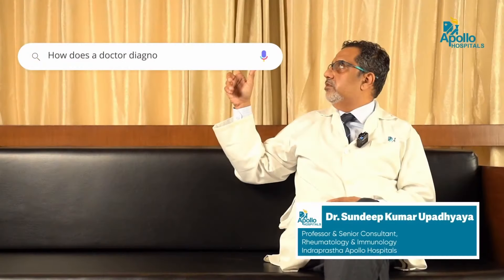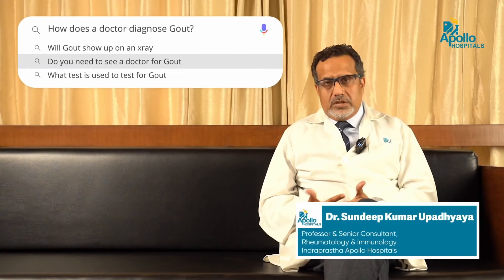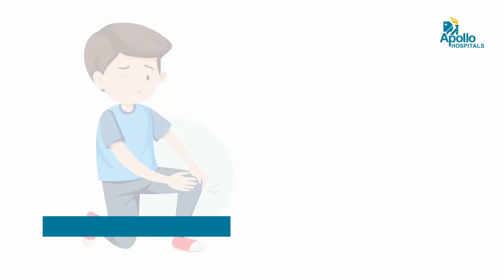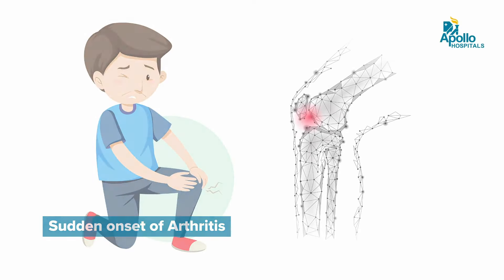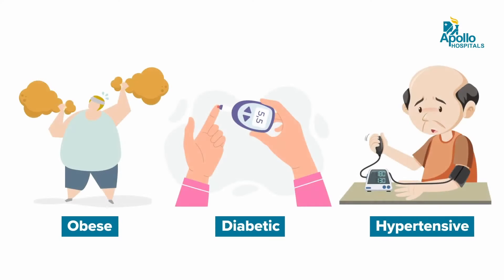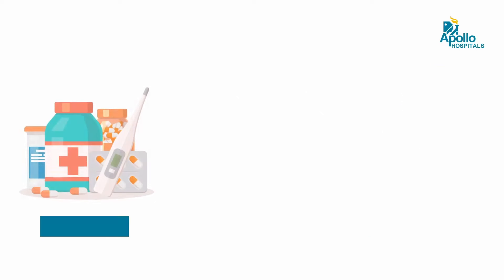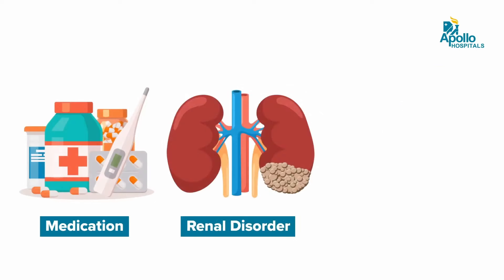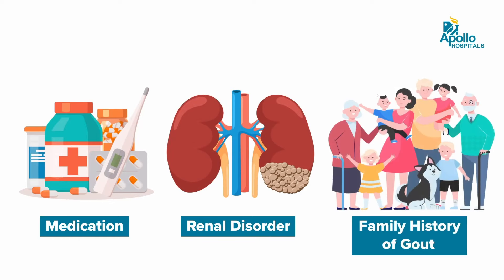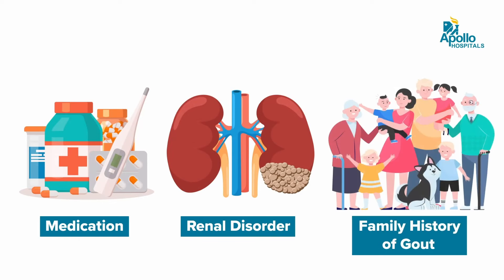How does a doctor diagnose gout? The doctor or rheumatologist diagnoses gout by its typical clinical features — the history of thunderclap, sudden onset arthritis. Even if this is not a current attack, the average patient with gout is a male who is overweight, probably diabetic, hypertensive, on several medications, or has mild renal disorder, and has a family history of gout. All these features would indicate the possibility of gout in an individual.